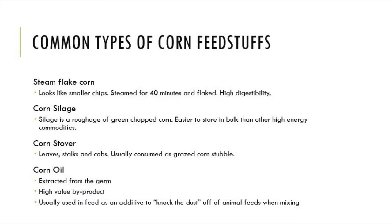We also have corn silage. Corn silage is a roughage and it is green chopped corn. It is easier to store than other high energy commodities such as hay because you are able to store it in one large concentrated area. Corn stover includes anything such as leaves, stalks, or cobs. It is used a lot in biofuel production such as ethanol.